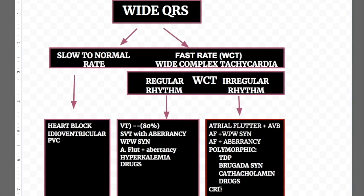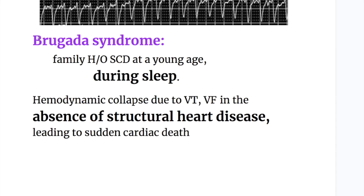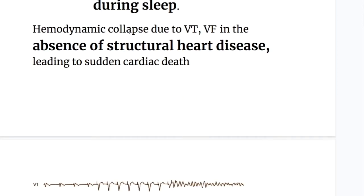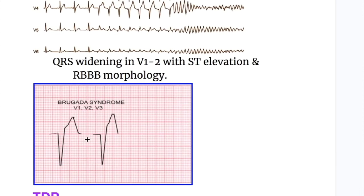Chronic renal disease can also cause wide complex irregular rhythm tachycardia. Brugada syndrome — there is a family history of sudden cardiac death at a young age, especially during sleep, hemodynamic collapse due to ventricular tachycardia and fibrillation in the absence of structural heart disease. EKG shows QRS coved pattern in anterior chest leads with ST elevation and right bundle branch block morphology.